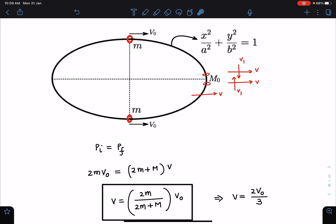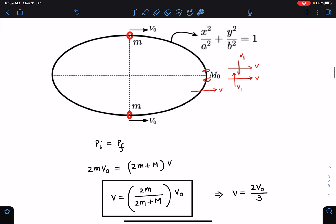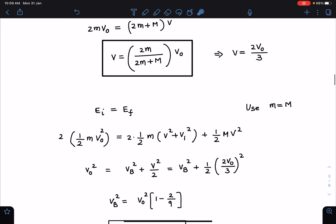This horizontal velocity will be known to you because they are touching, so they must have equal velocities here. If m is equal to capital M, I am getting v is equal to 2 v0 by 3.